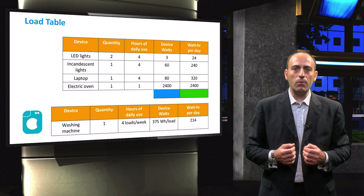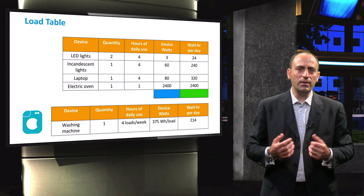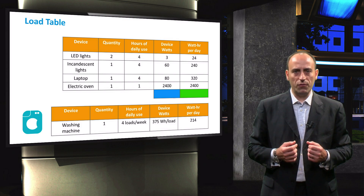If the exact power consumption of a load cannot be found, an educated guess will suffice. A load table analysis is only useful when carrying out a quick and simple PV system design. Advanced PV system modeling requires a more advanced load analysis. This is called the load profile analysis, which we will now discuss.